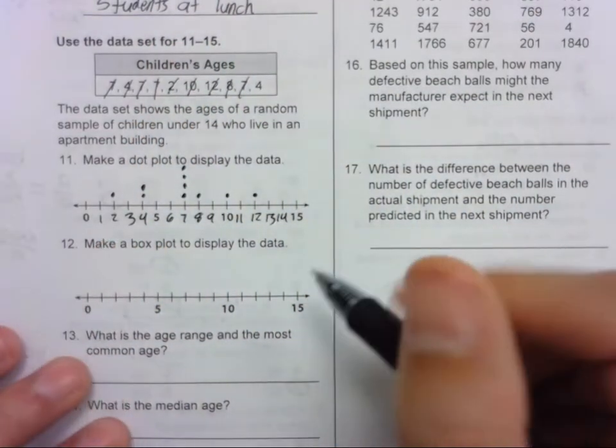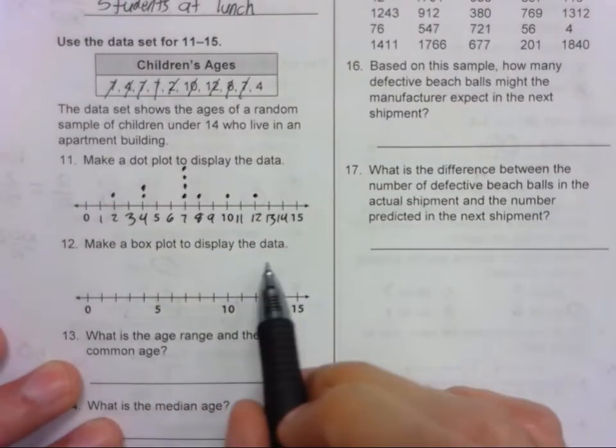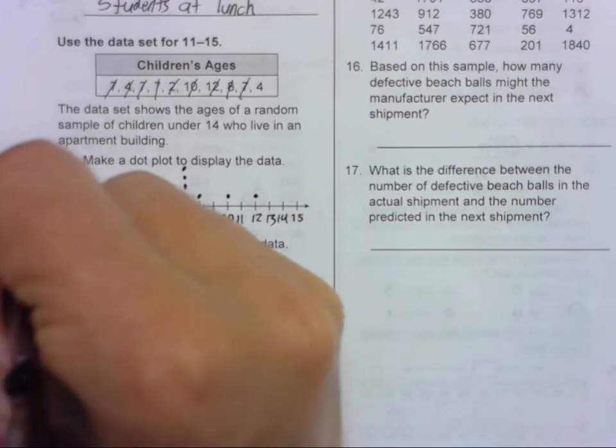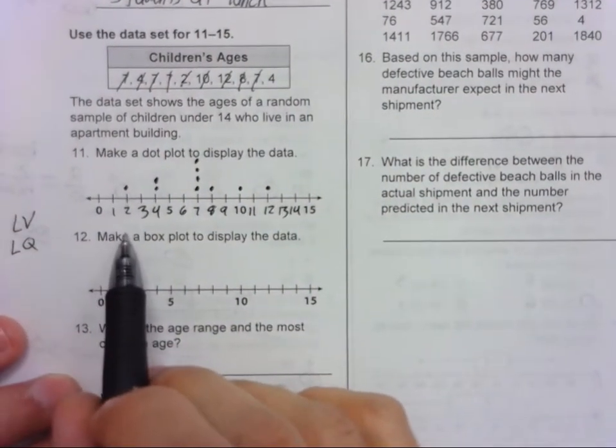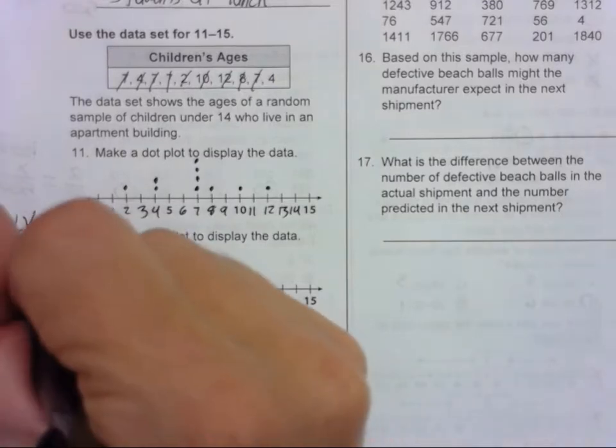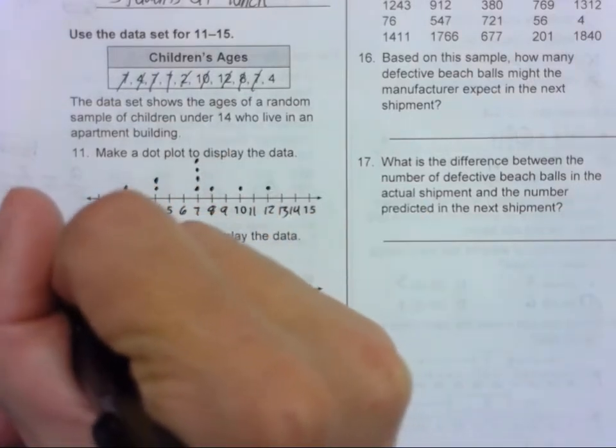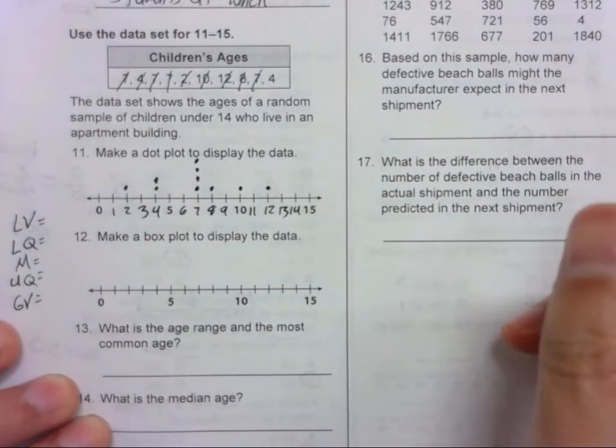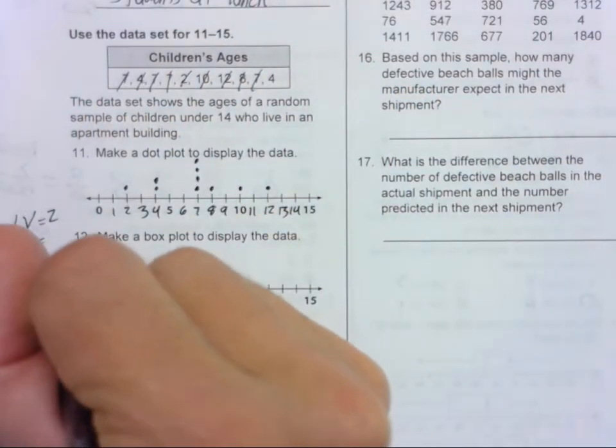Now we need to make a box plot to display the data. So we need our 5 points: lowest value, lower quartile, median, upper quartile, and the greatest or highest value. So our lowest value is 2, our greatest value is 12. Those are the easier ones.